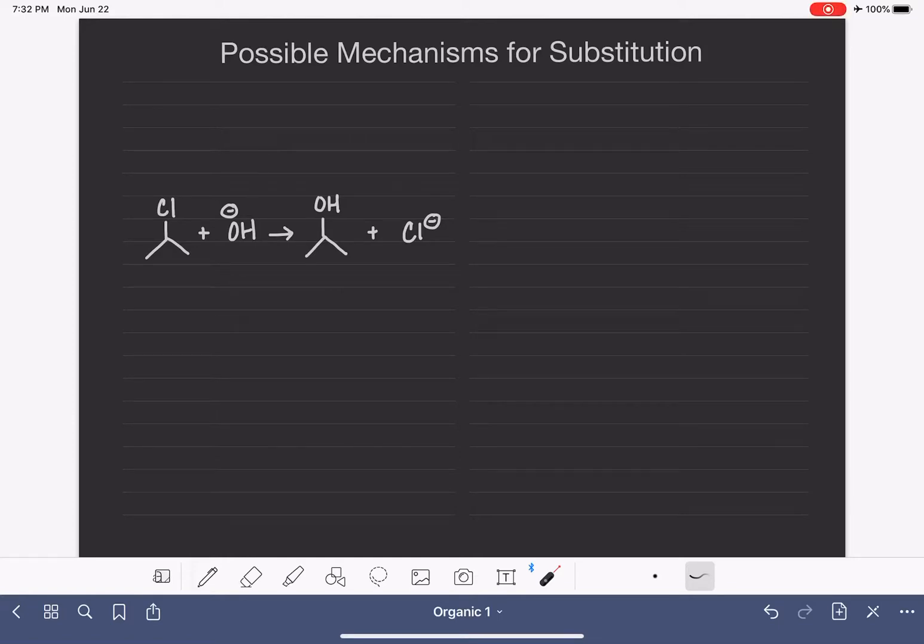The substitution reaction involves substituting or replacing one functional group on a molecule with a new, different functional group, like this reaction right here. There are two possible ways that substitution can occur.